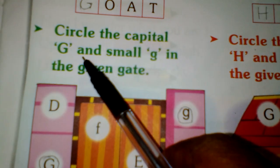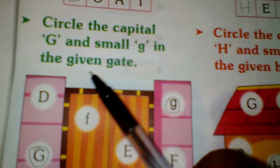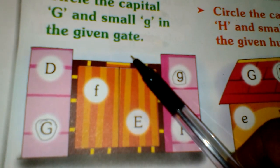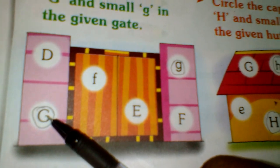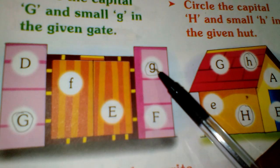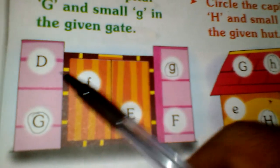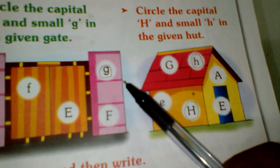Circle capital G and small g in the given gate. Gate and words with G. Around D-E-N.